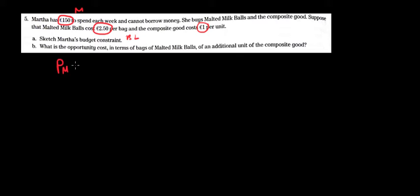We spend money on milk, so price of milk times milk plus the price of the composite good times the composite good equals to the money that we spend. Yeah, yeah, it's going to be M and M. But no problem, we're going to substitute values in a second and it's going to be okay.